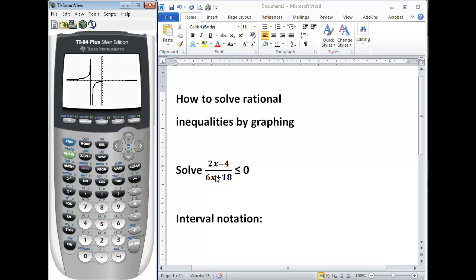So for our rational inequality we want to know where is this graph less than or equal to 0. So where are the y values for our graph 0 or negative. So if we look at our graph our values are negative in this section all the way up to here, positive 2. Positive 2 is our x intercept.